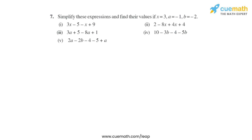Question 7 of this exercise says: simplify these expressions and find their values if x equals 3, a equals minus 1, and b equals minus 2. We will simplify these expressions first and then find their values by putting in the given values of x, a, and b.